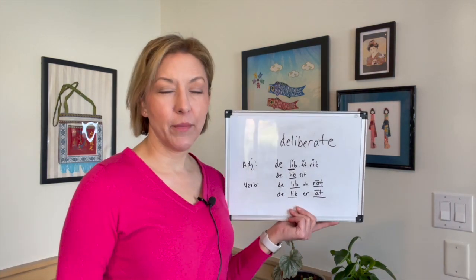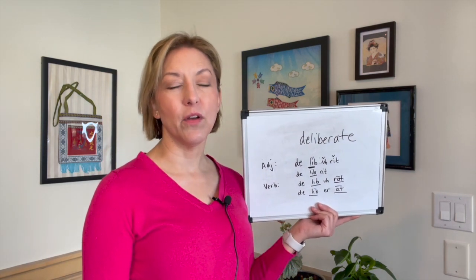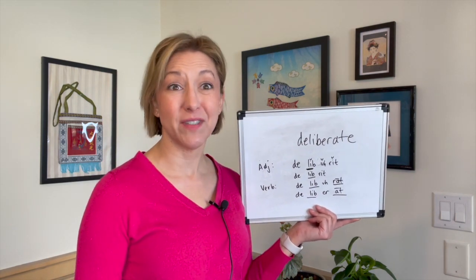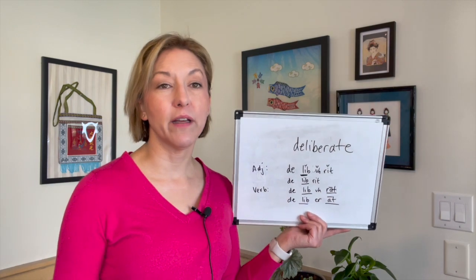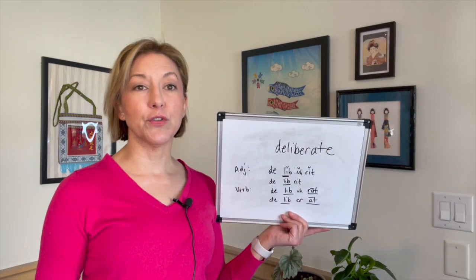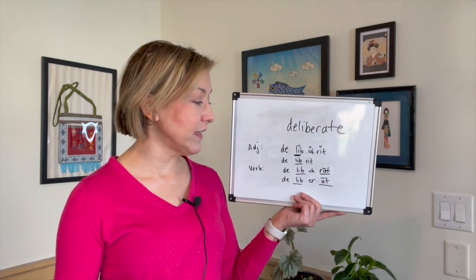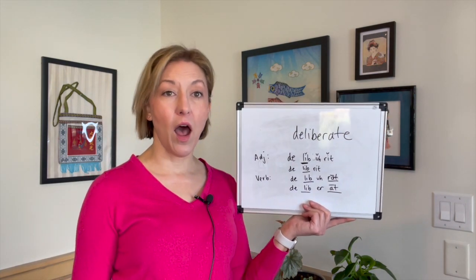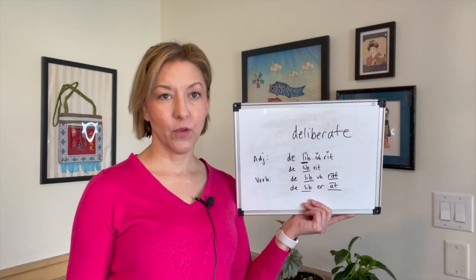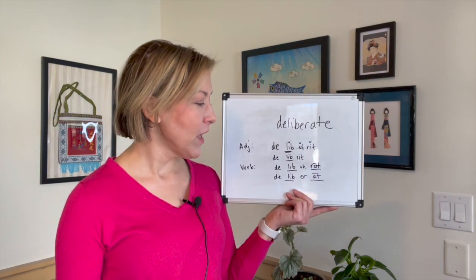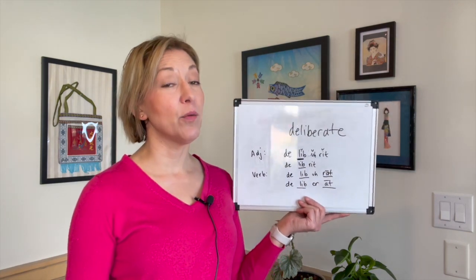For the verb, I'm going to teach this with a different break in the syllables. When said quickly, they sound almost exactly the same. You can say de-lib-erate or de-lib-erate — it just depends on where you want to put that 'r.' When you say it quickly, you are going to stress syllable two and syllable four.